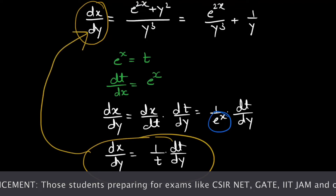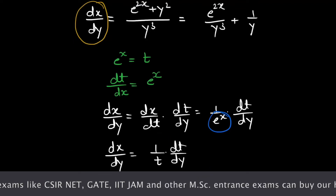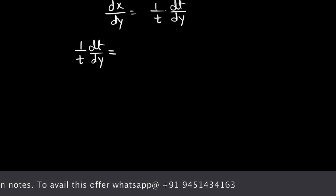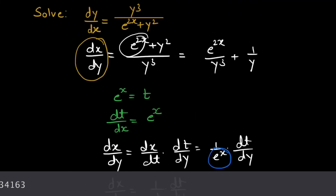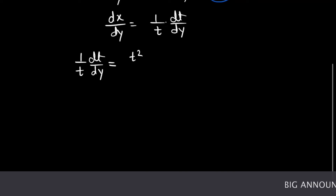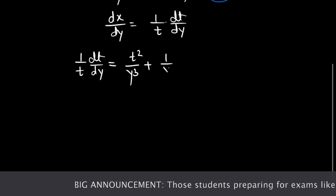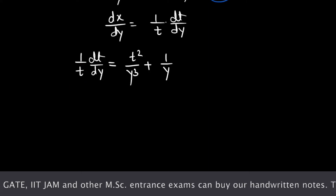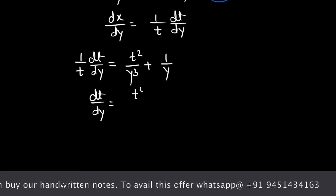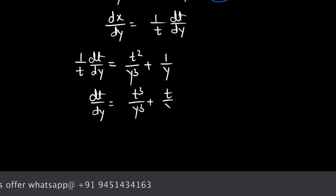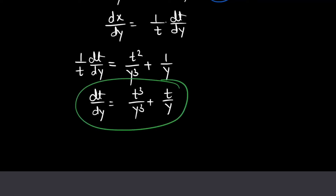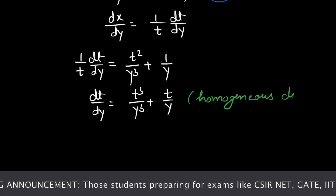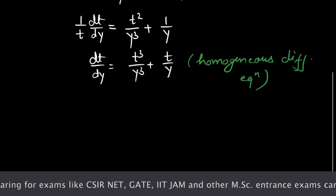After substituting, we get 1 over t times dt/dy equals e^x squared, which is t², so t² over y³ plus 1 over y. Multiplying t into the right hand side, we get dt/dy equals t³ over y³ plus t over y. This differential equation is a homogeneous differential equation.